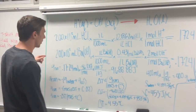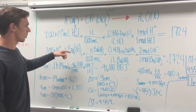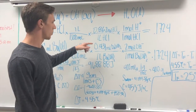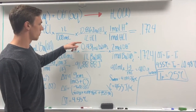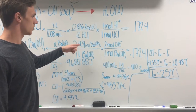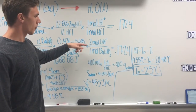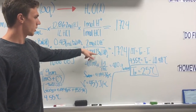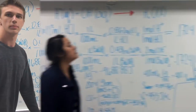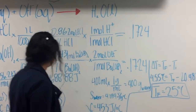For OH⁻, we have 200 milliliters of Ba(OH)₂, convert that to liters, then use the molarity of 0.431 moles per liter to get the moles. Then by using the mole ratio of 2 to 1, because Ba(OH)₂ has a coefficient of 2, we also get 0.1724 moles. We have now found our moles of H⁺ and moles of OH⁻.